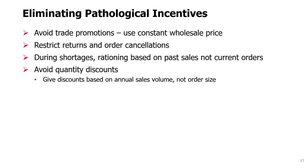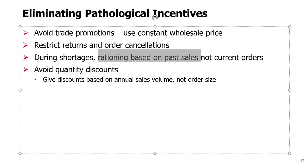Another idea is to restrict returns and order cancellations. Generous return and cancellation policies allow customers to order more than they really need, since they can always return or cancel orders later — which increases the bullwhip effect. Restricting returns or order cancellations can reduce it. As for rationing during shortages, ration based on past sales, not current orders. Current orders can be inflated, whereas past sales are much closer to actual demand.